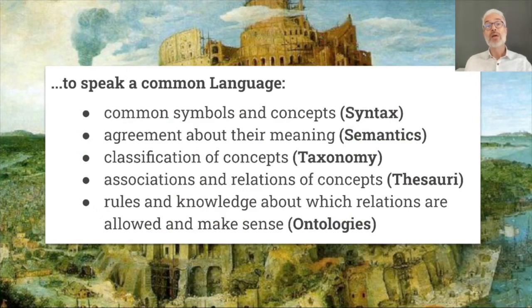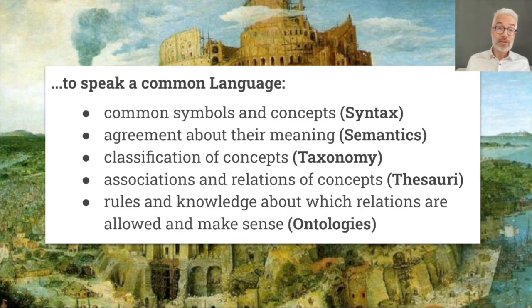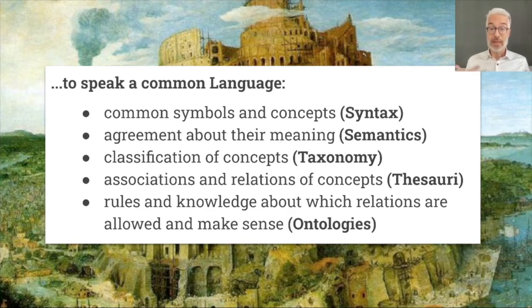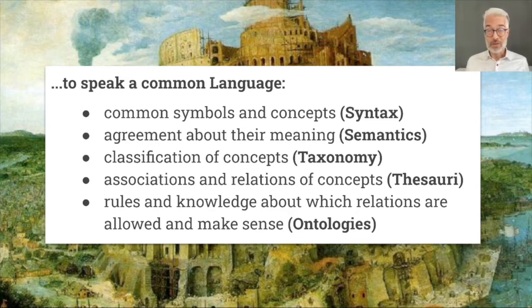Speaking a common language means we must use common symbols and concepts — that's the basic syntax. We must agree about their meaning — that's semantics. For concepts, we create a classification system, a taxonomy. We say which concepts relate to or are associated with other concepts, creating a thesaurus. Then we also need rules and knowledge about which relations between concepts are allowed and which are not — and this is done via ontologies.